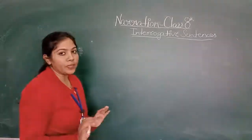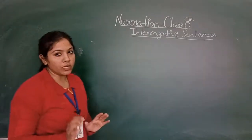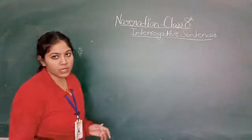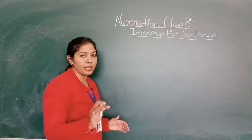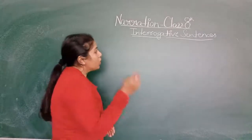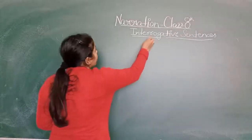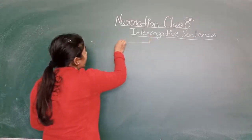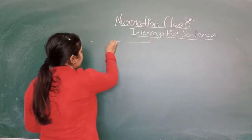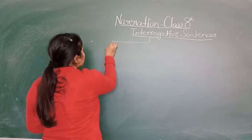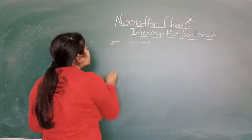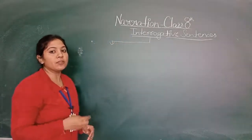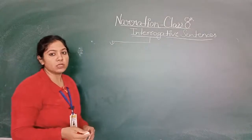Students, interrogative sentences are of two types. There are two interrogative sentences. One is the sentences that start with auxiliary verbs, and the other type starts with WH-words.